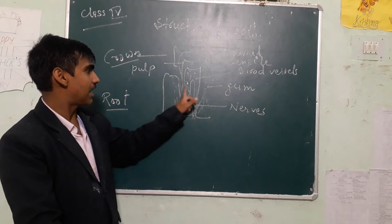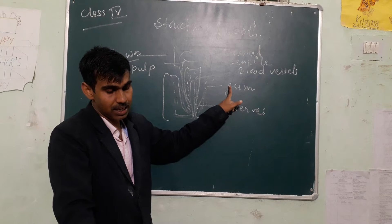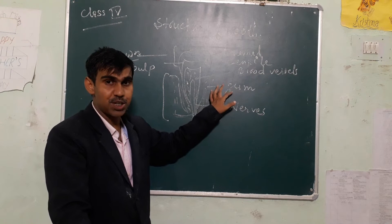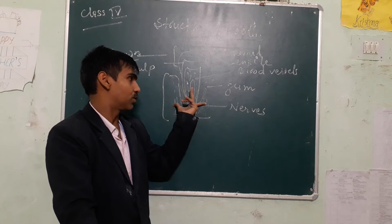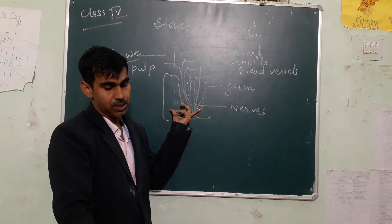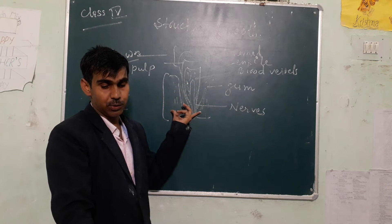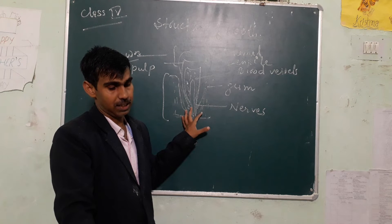This part is the gums part. That means the soft tissue that surrounds the base of the tooth. The tissue that we have around the tooth's base is called gums.